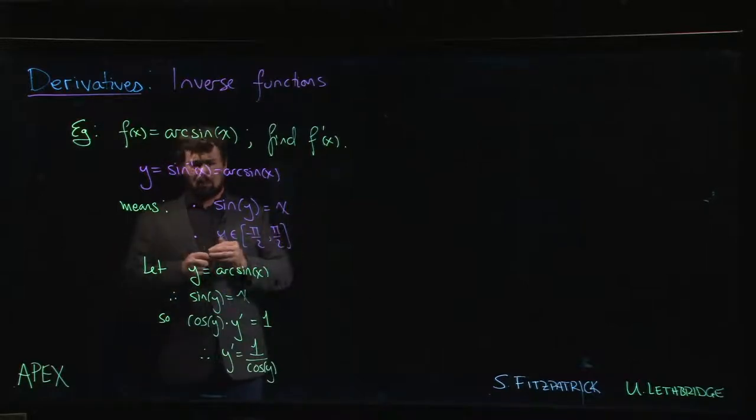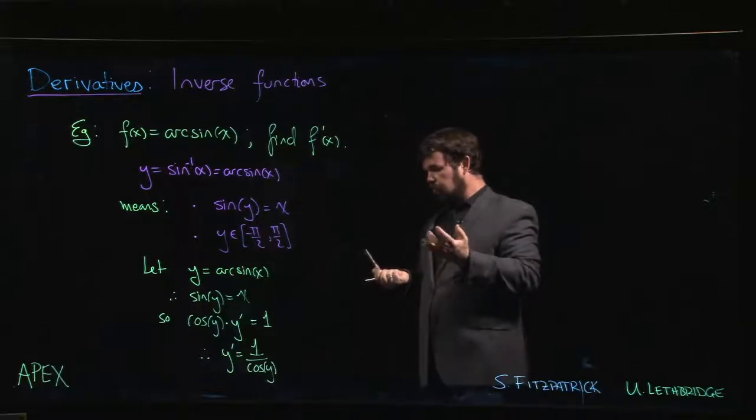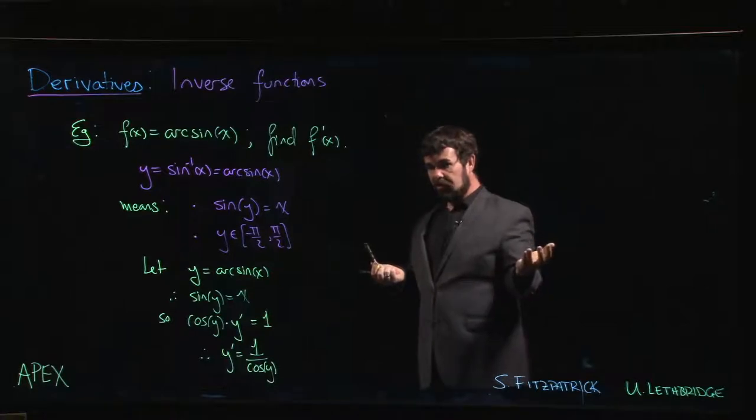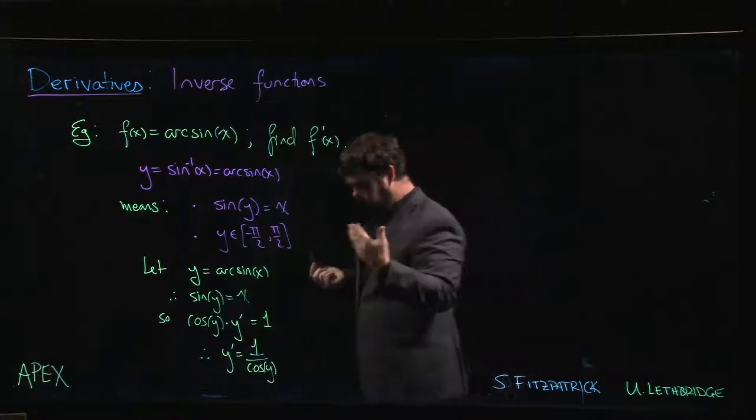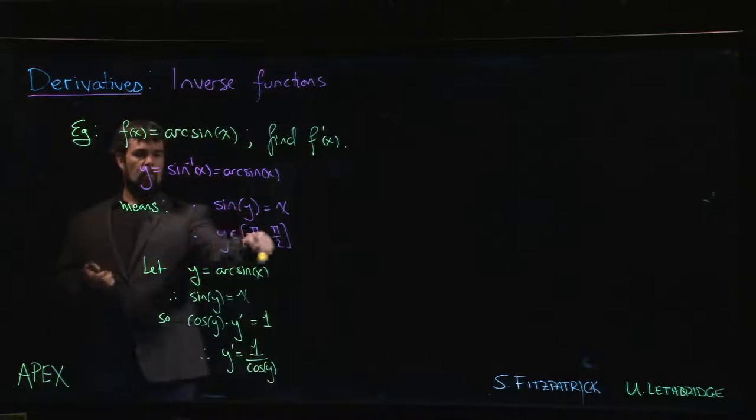Not the most enlightening formula, right? Not what you really want to end up with. This is supposed to be f prime of x - it should be something in terms of x, not y. So how do we simplify this? Where do we go from here?